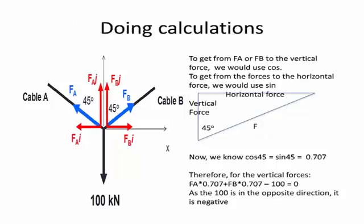So let's start on the example. For the B-force, using the simple right-angled triangles we can see, to use cos 45 times by our force for our vertical forces, and sine 45 times by our force for the horizontal force.